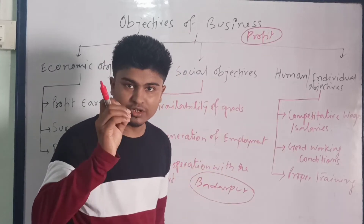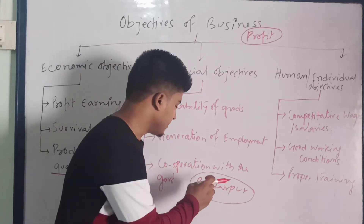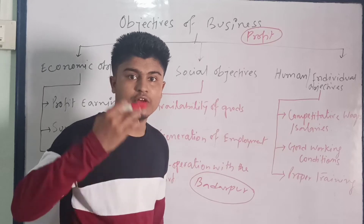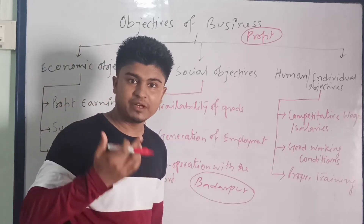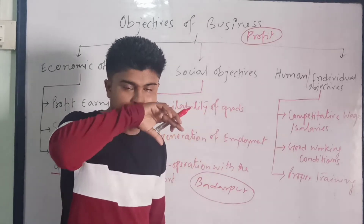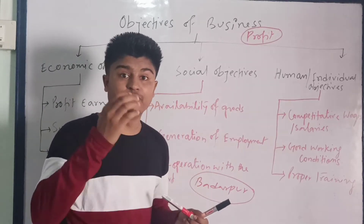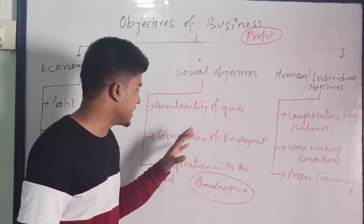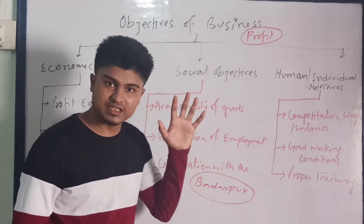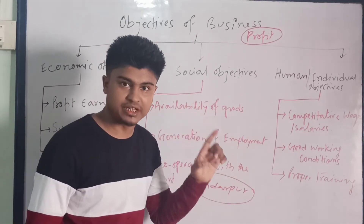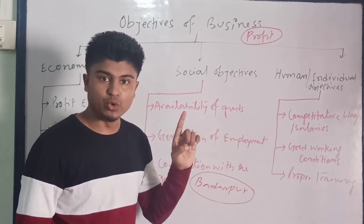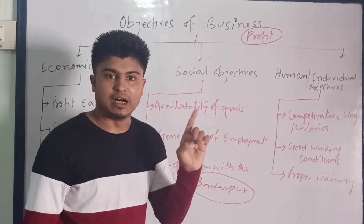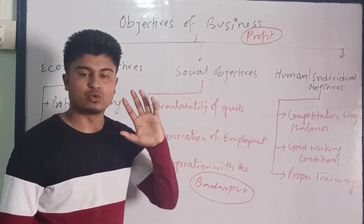The business should not act as though it is situated in one area but hires employees from a completely different place like Silchar or Gauhati. If the business does that, it is avoiding social responsibility. So under social objectives, generation of employment means: where the business is established, the people of that area should get sufficient opportunity to work and earn their livelihood.